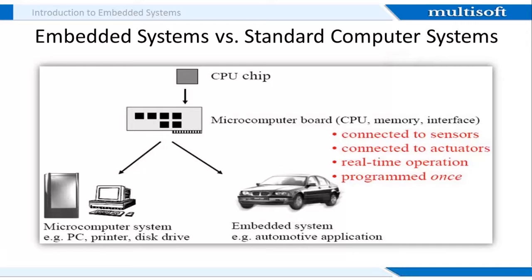Embedded systems form the basis of the so-called post-PC era, in which information processing is increasingly moving away from just PCs to embedded systems. One characteristic of embedded software is that it is heavily dependent on the underlying hardware, because embedded software needs to be designed in an application-specific way. For example, modern cars and trucks contain many embedded systems: one controls the anti-lock brakes, another monitors and controls emissions, and a third displays information on the dashboard. These embedded systems are sometimes connected via a communications network, but that is not a requirement.